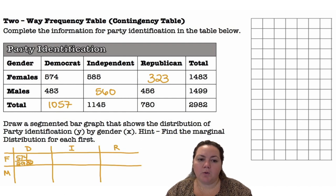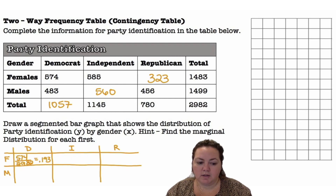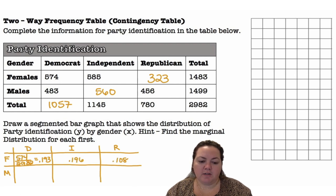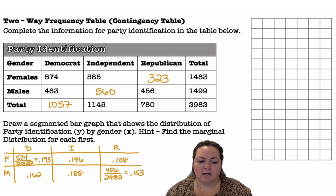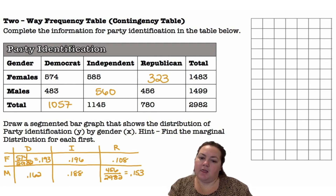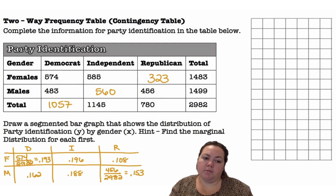So we're going to go ahead and find those marginal distributions. Out of the table total of 2,982, we're going to look at female Democrats: 574 out of 2,982 gives us 0.193, or 19.3%. And I'm going to do that for each cell, taking each value and dividing it by the table total.